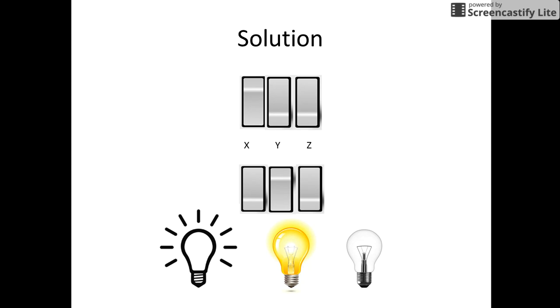Now open the door and touch the light bulb. If the light is on, it is switch Y. If the light is off and hot, it is X. But if the light is off and the bulb is cold, it is Z.